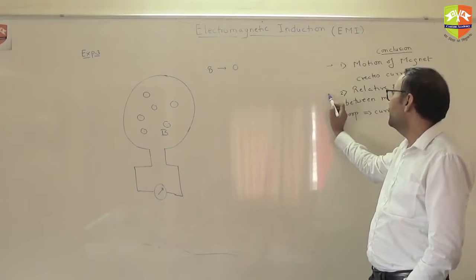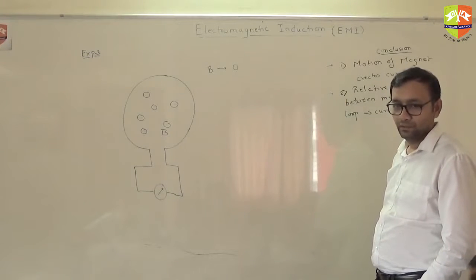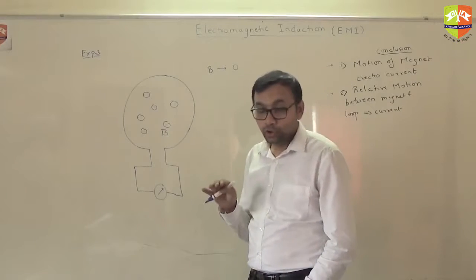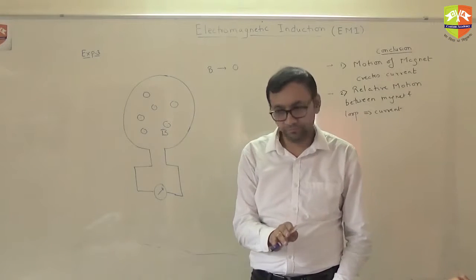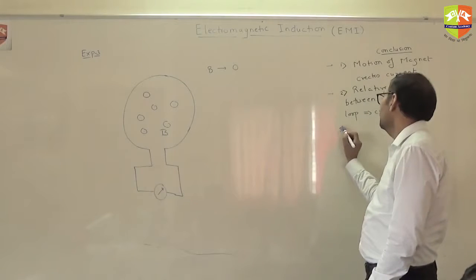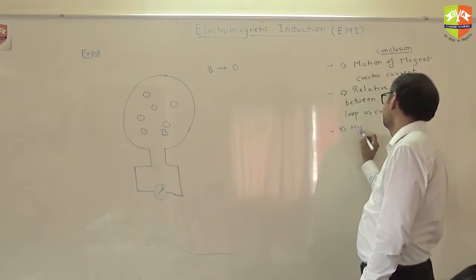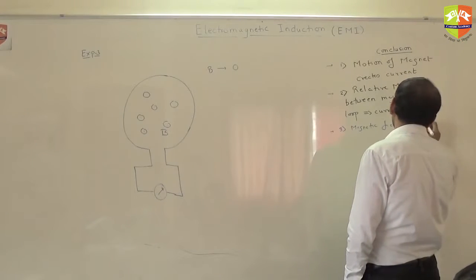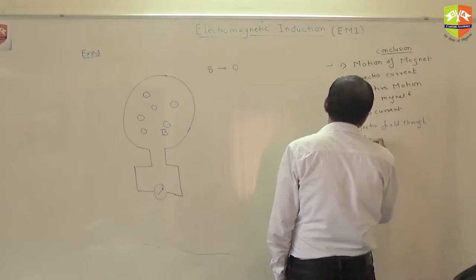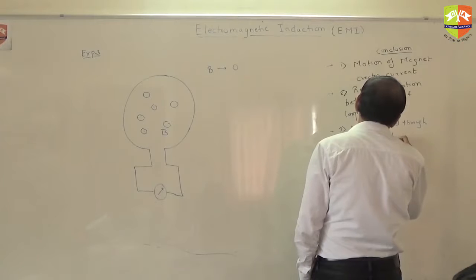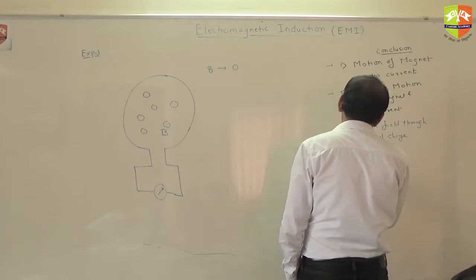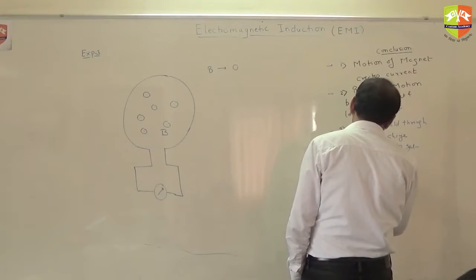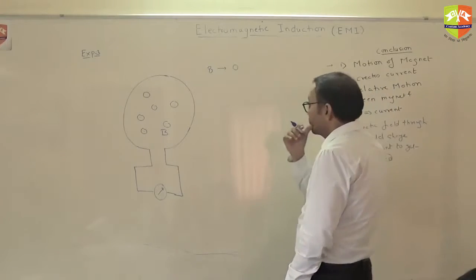Is magnetic field changing in 1 and 2? Magnetic field through the coil should change. You think it? So, the conclusion 3 is magnetic field through the coil should change. For current. To get generated. Any doubt till now?